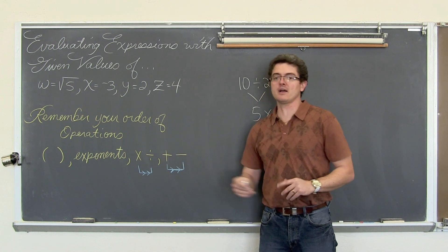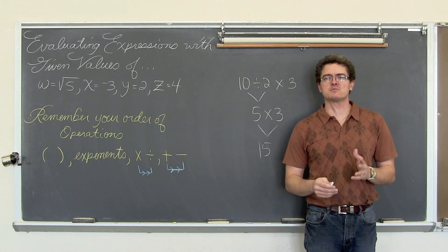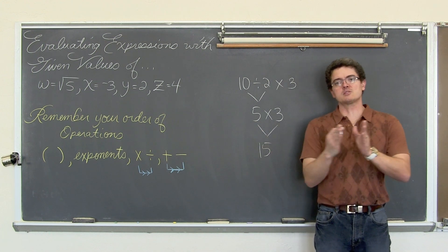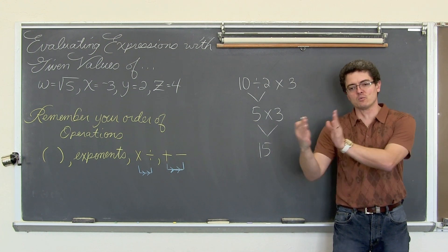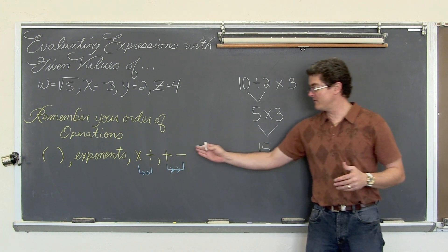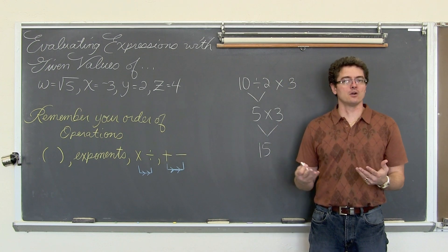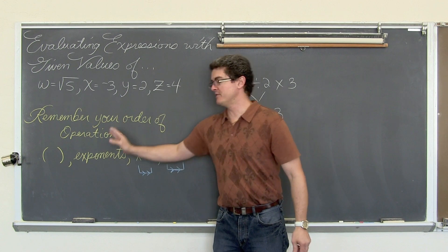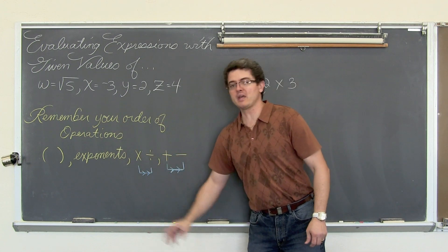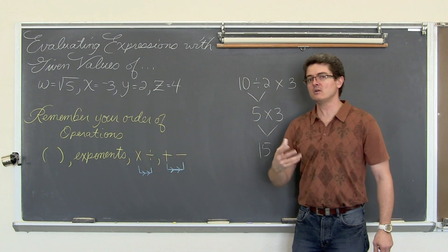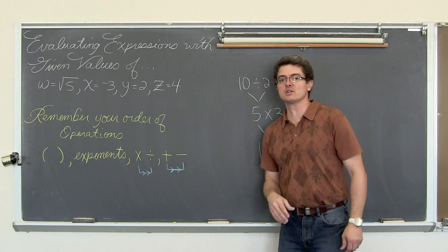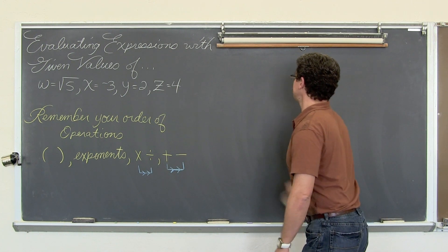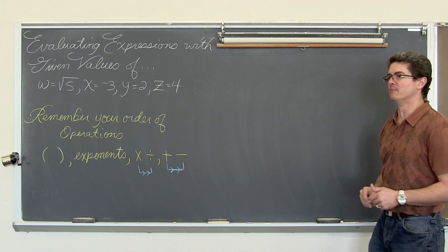Same thing with addition and subtraction. We don't necessarily add before we subtract. Those are on the same level playing field. You read through the expression left to right and do whatever of these two you see first. Ultimately: parentheses first, then exponents, then multiplication and division together — whatever comes first — and then addition and subtraction. Keeping that in mind, let's do our first example.